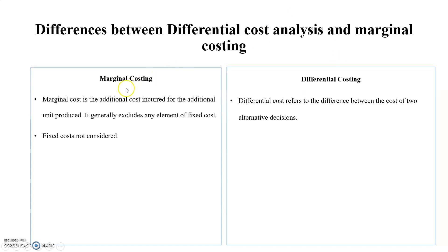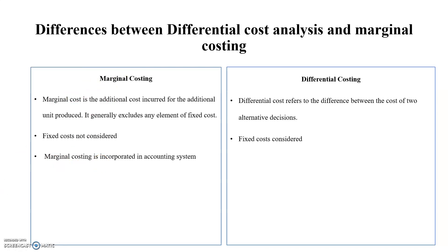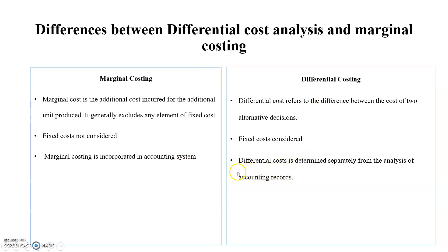In marginal costing, fixed cost is not considered — only variable cost is considered. But in differential costing, both variable and fixed costs are considered if there is any change in either. Additionally, marginal costing is incorporated in the formal accounting system, whereas differential costing is determined separately through analysis of existing accounting records, and is used by managers for decision making.